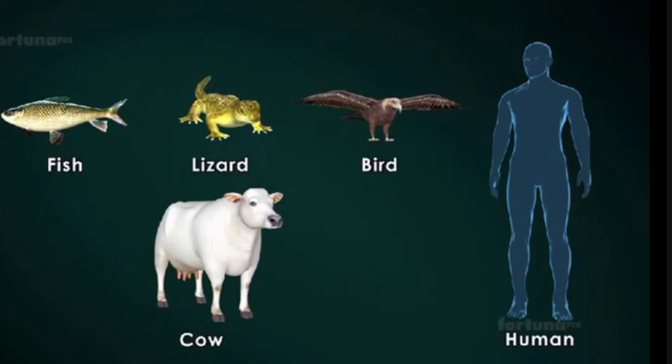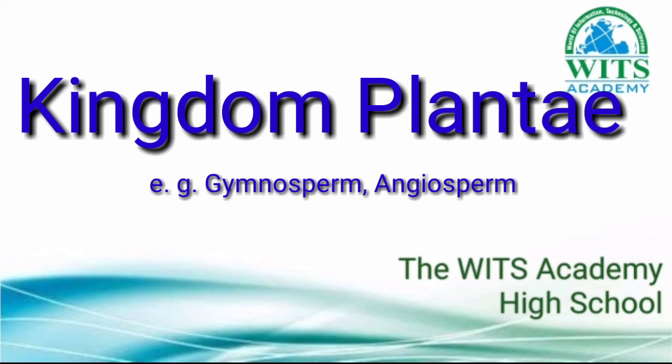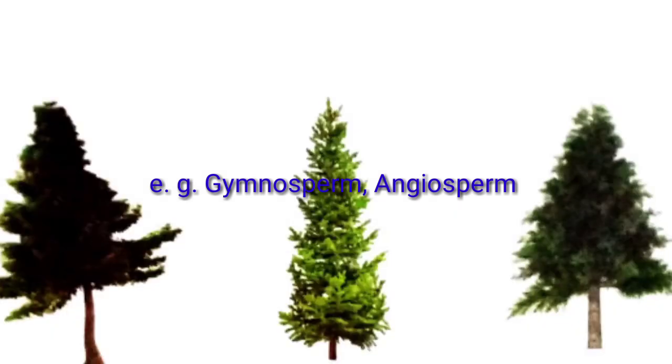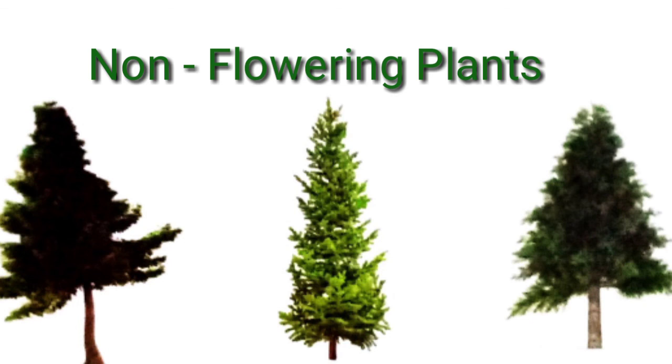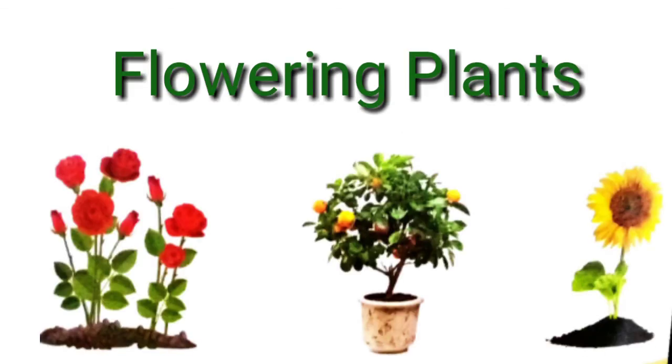Our last kingdom is Kingdom Plantae. Kingdom Plantae is also divided into subgroups: Flowering Plants and Non-Flowering Plants. These are the Non-Flowering Plants and these are the Flowering Plants.